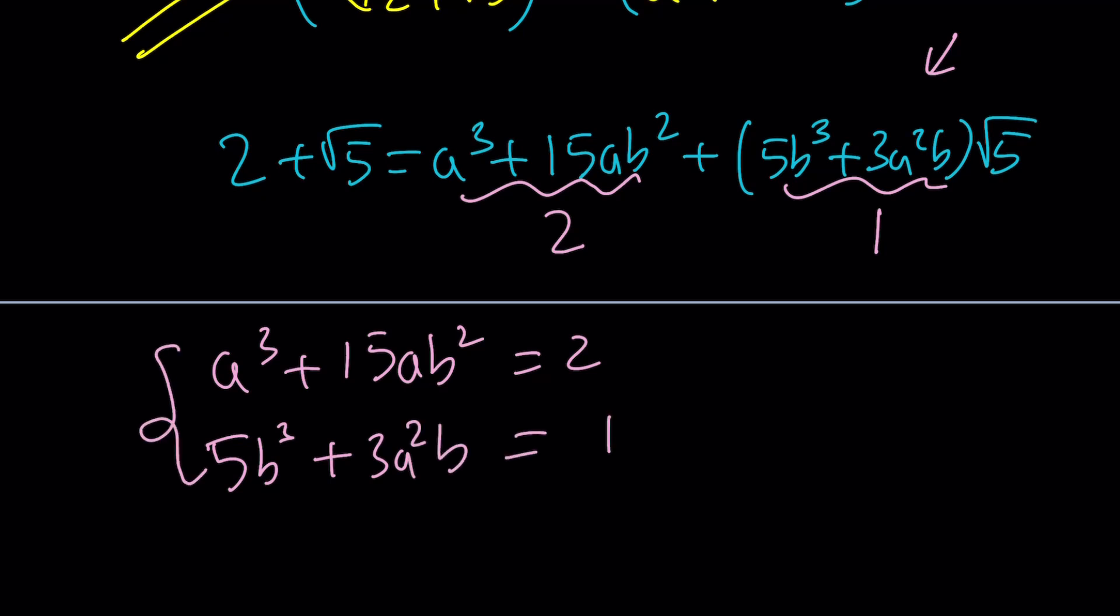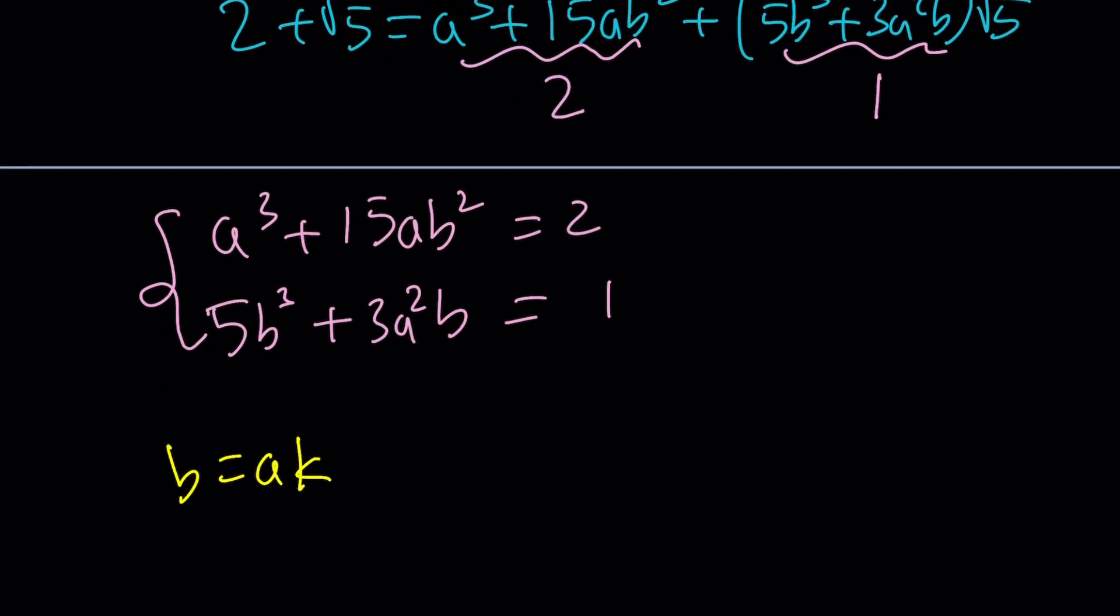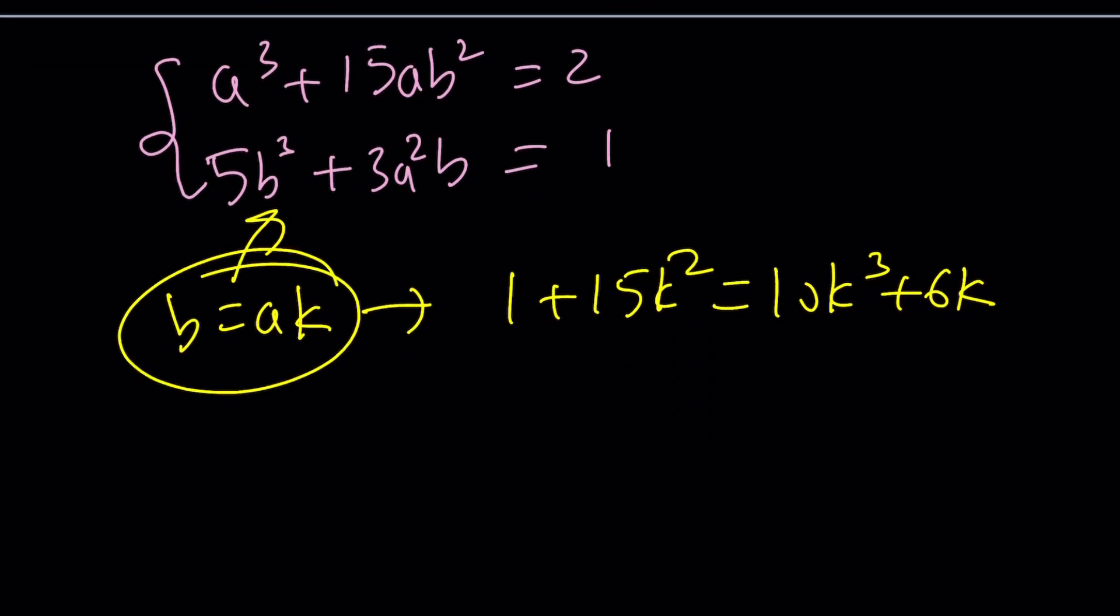Which means you can replace b with something like a k and from here you get the following equation. 1 plus 15k squared equals 10k cubed plus 6k. Please try to get that by replacing b with a k in both of these equations. And then guess what? k equals 1 is a solution. Uh-oh. Again, the obvious and this just means b equals a because remember b equals a k if a is 1, I mean if k is 1, b is equal to a. If b is equal to a, then I can just plug in